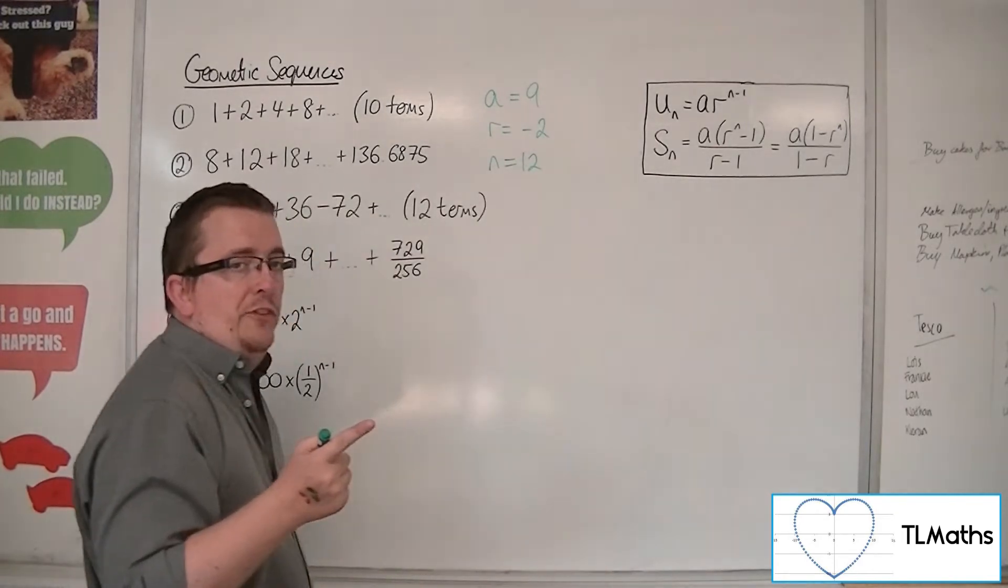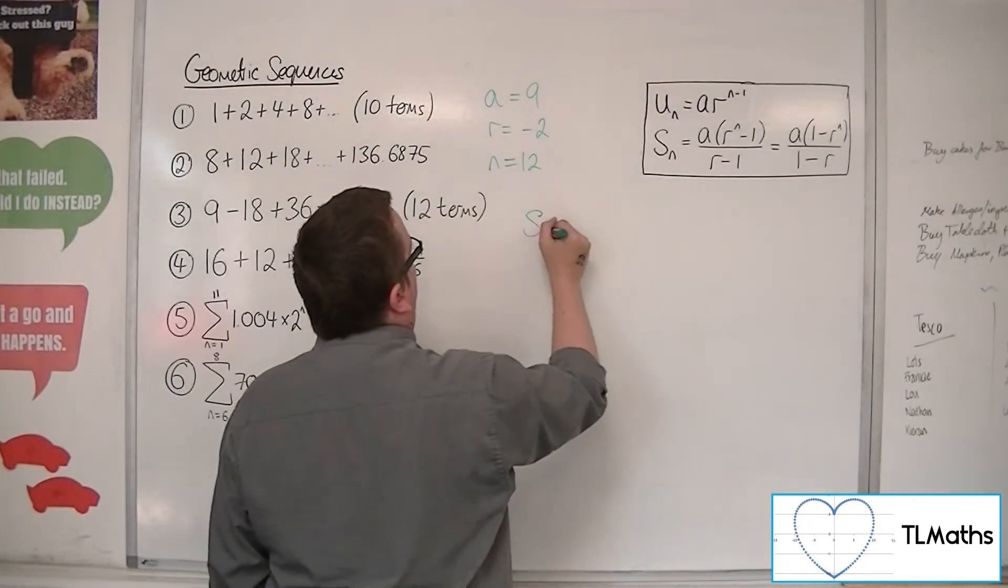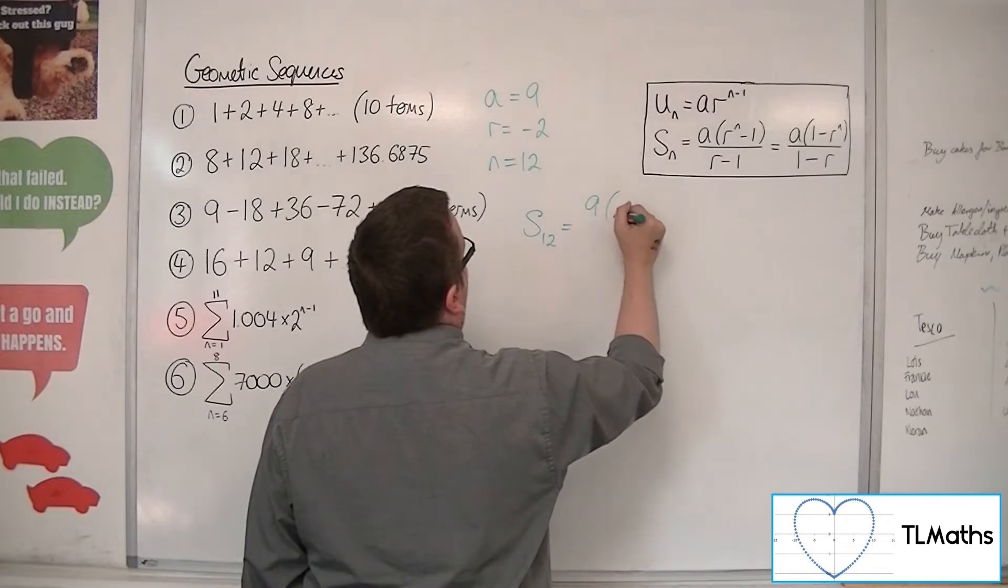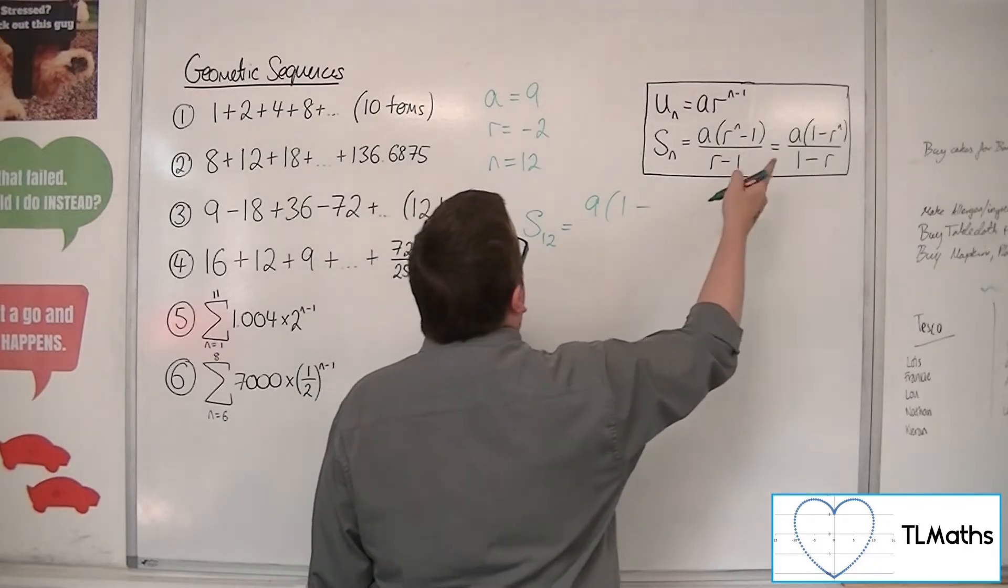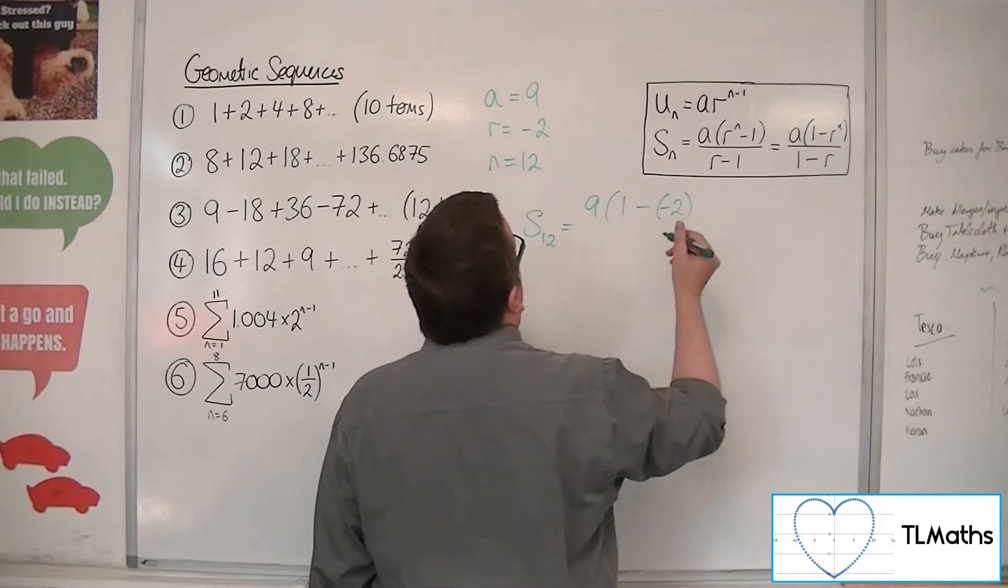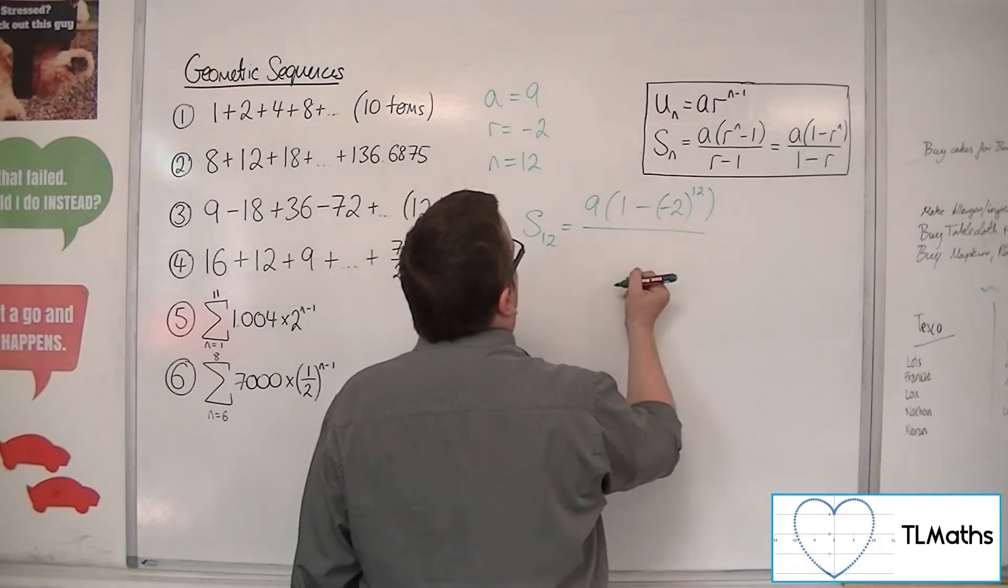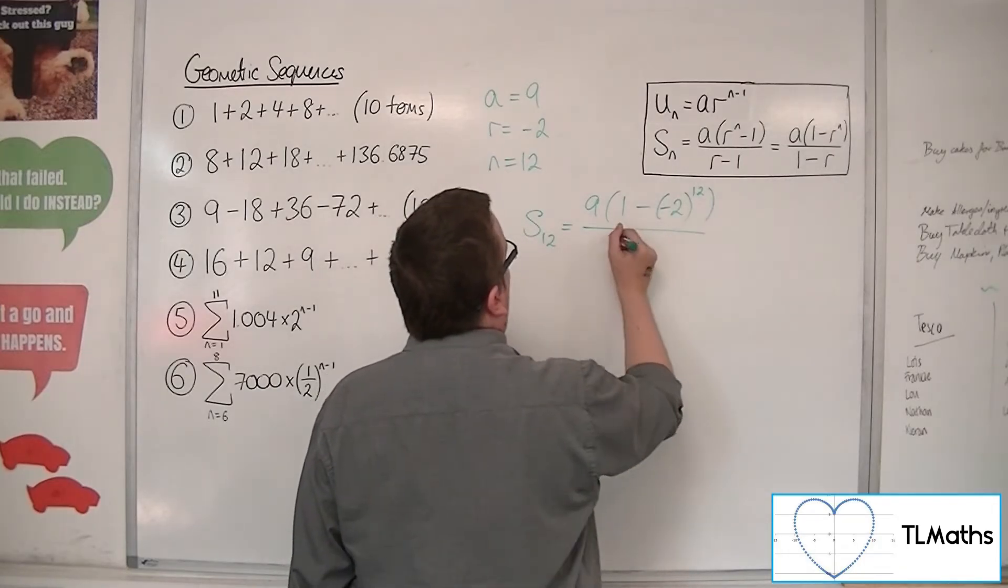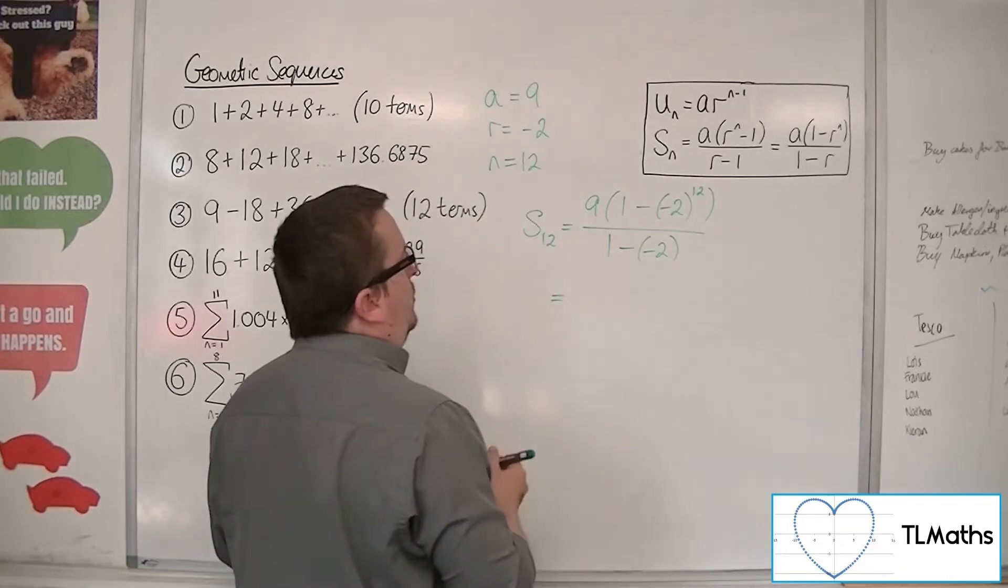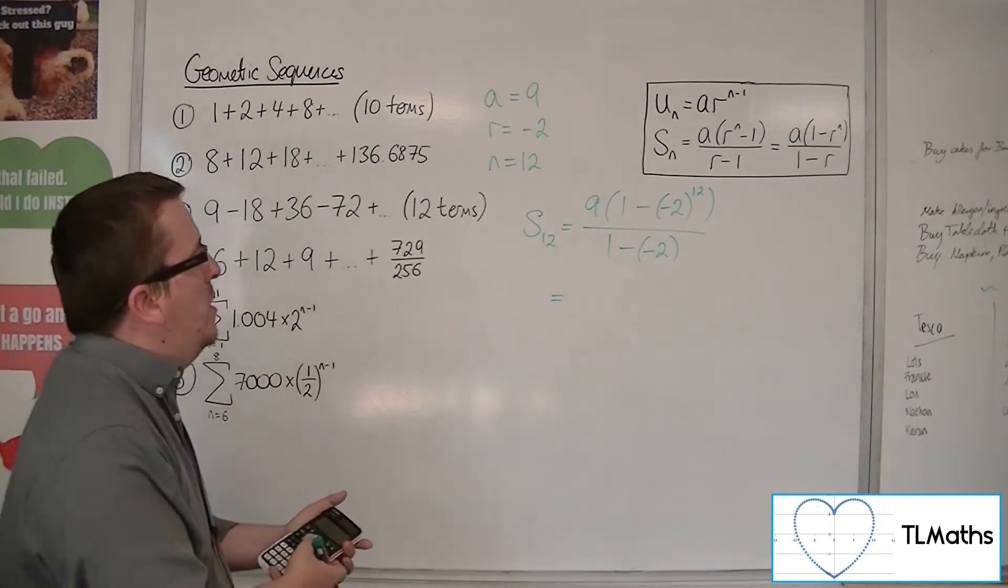Now, seeing as we haven't used it yet, I'm going to use the second one this time. So using that formula, the sum of the first 12 terms is a, which is 9, times 1 minus, now r is minus 2. So I'd pop that in a bracket to the power of n, so 12, all over 1 minus r, so 1 take away minus 2. So you've got to be a little bit careful with the negative here, making sure minus 2 is in a bracket.